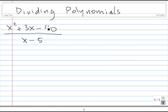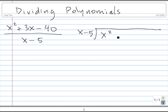To divide x squared plus 3x minus 40 by x minus 5, we start by writing down the x minus 5 and use the regular division notation. So x minus 5 goes on the outside, and x squared plus 3x minus 40 goes on the inside. We have to make sure that the numerator and the divisor are both in descending order of power. Both of these are, so we can proceed and divide.